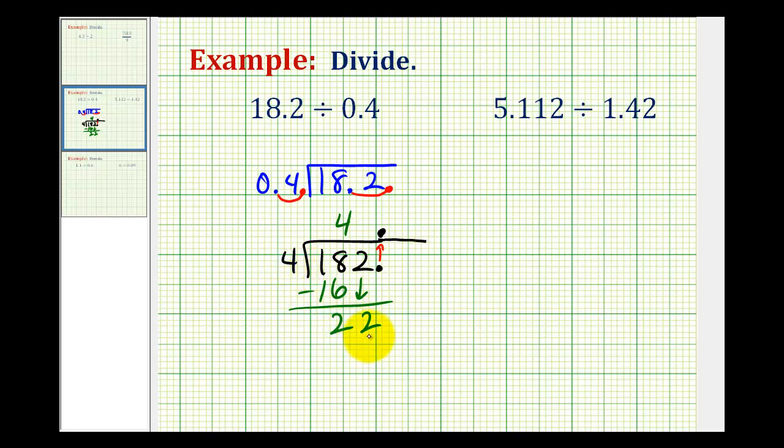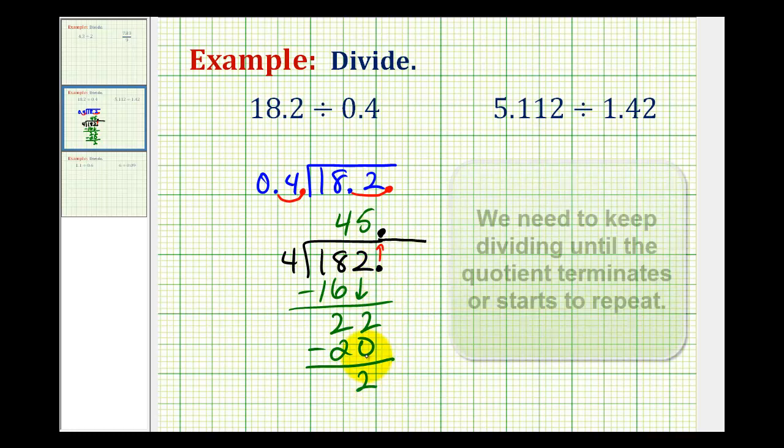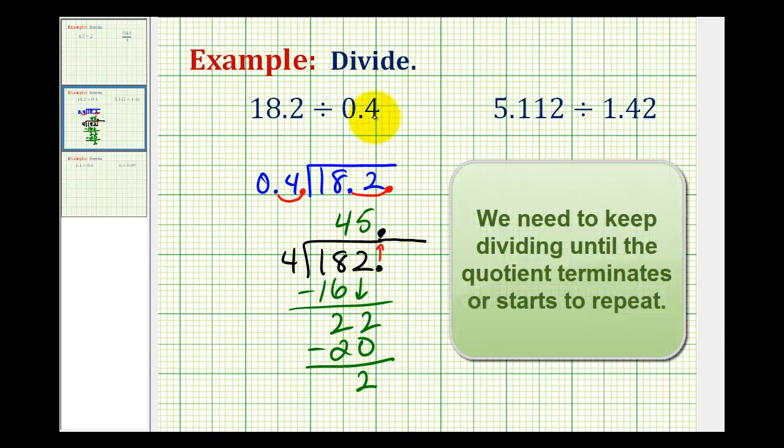So now we want to know how many fours there are in 22. That would be 5. 5 times 4 is 20. We subtract. We have a remainder of 2. But we don't want to use remainder notation when we're working with decimals.